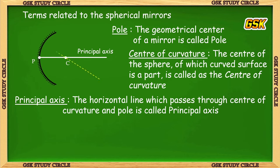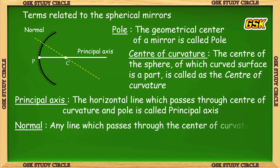Next, normal. Any line which passes through the center of curvature is called a normal. These four terms — pole, center of curvature, principal axis, and normal — are the most commonly used terms for curved surfaces and we should remember them well.